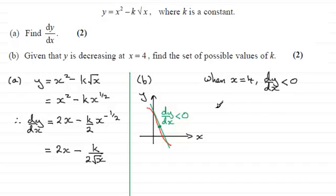So therefore, if we substitute x equals 4 into here, we've got 2 times 4, minus k over 2 root 4, and that's got to be less than 0.